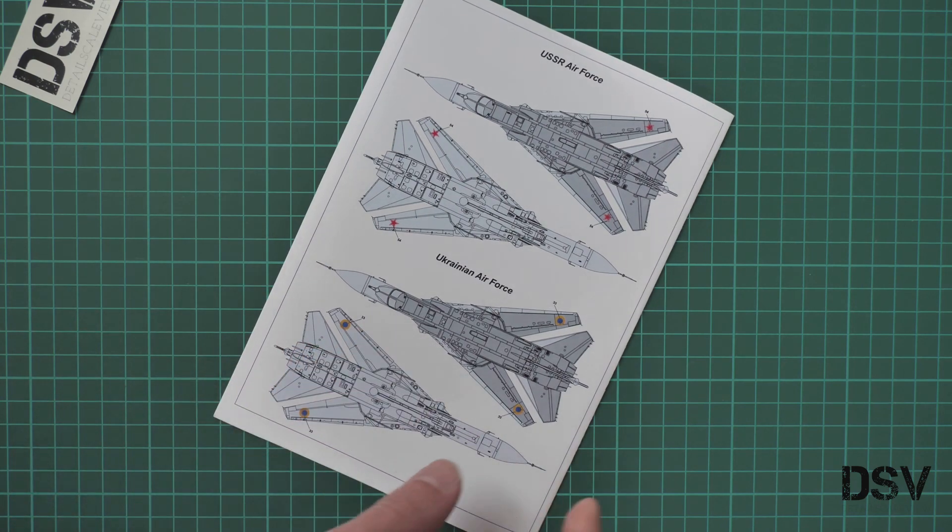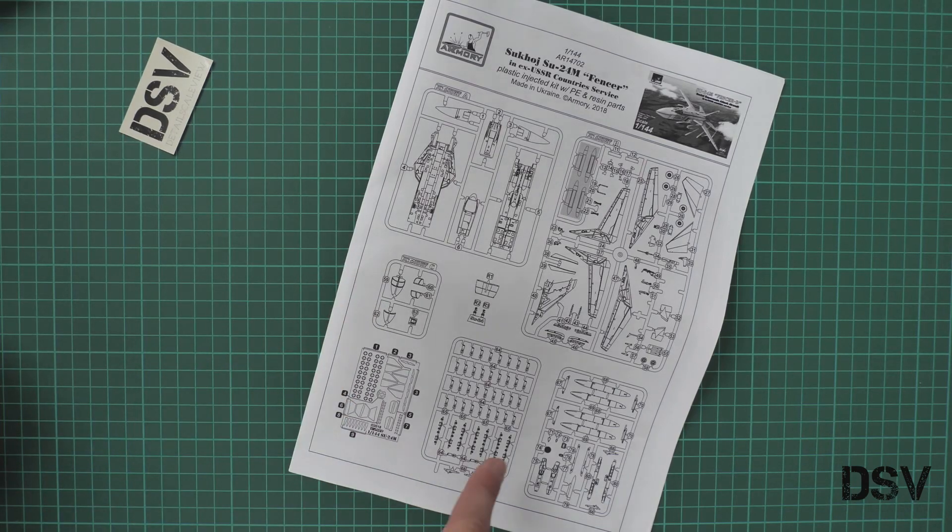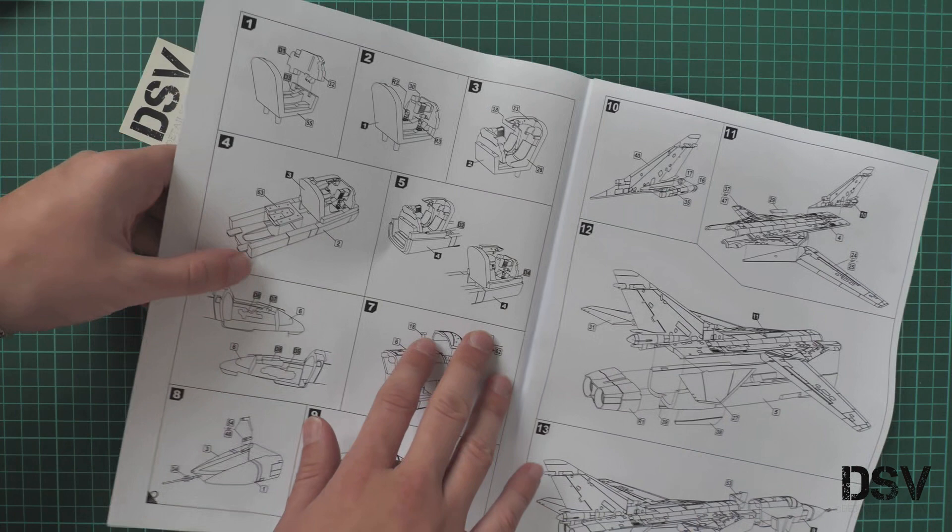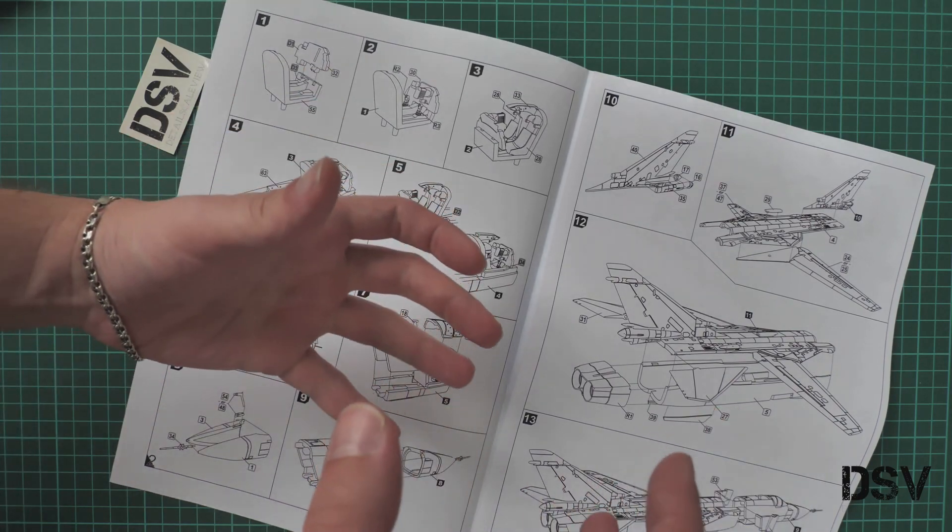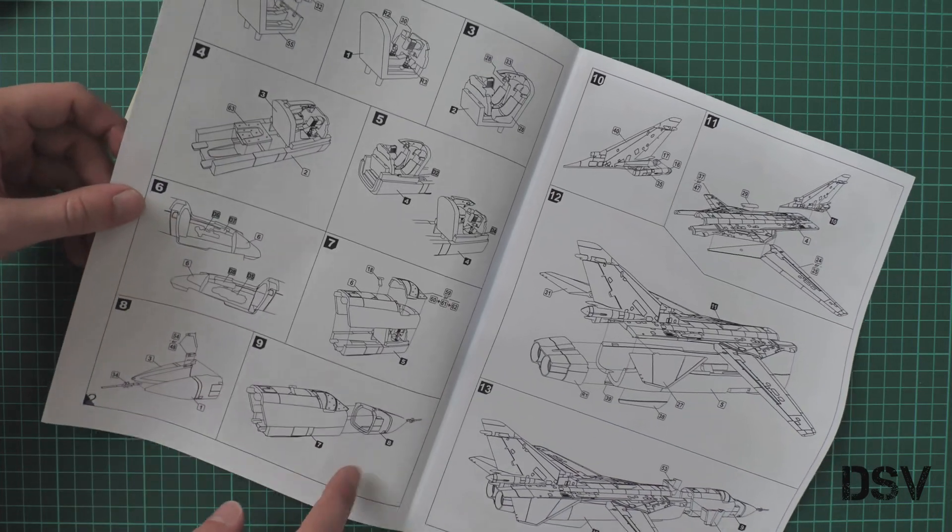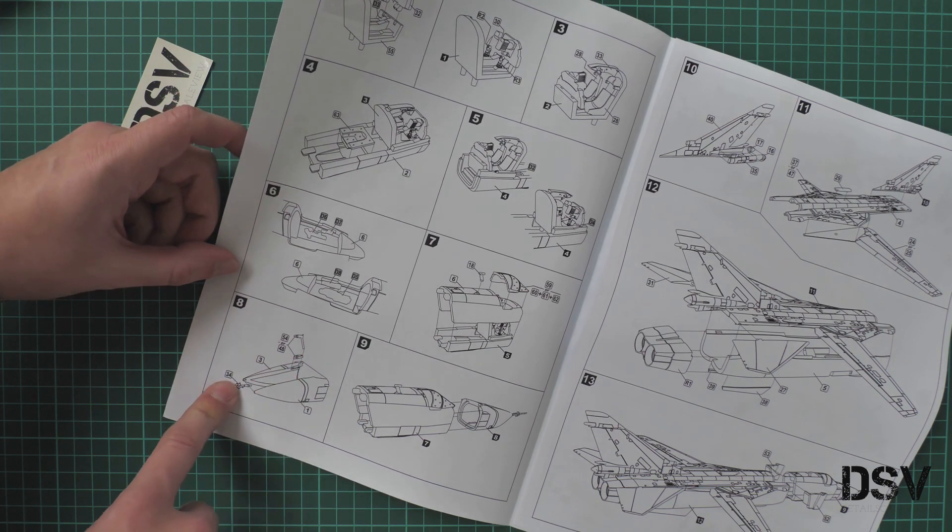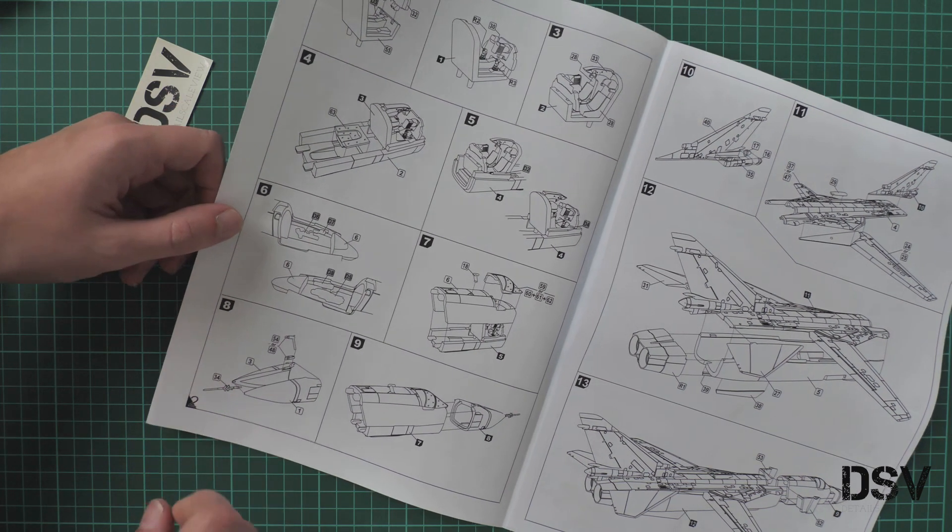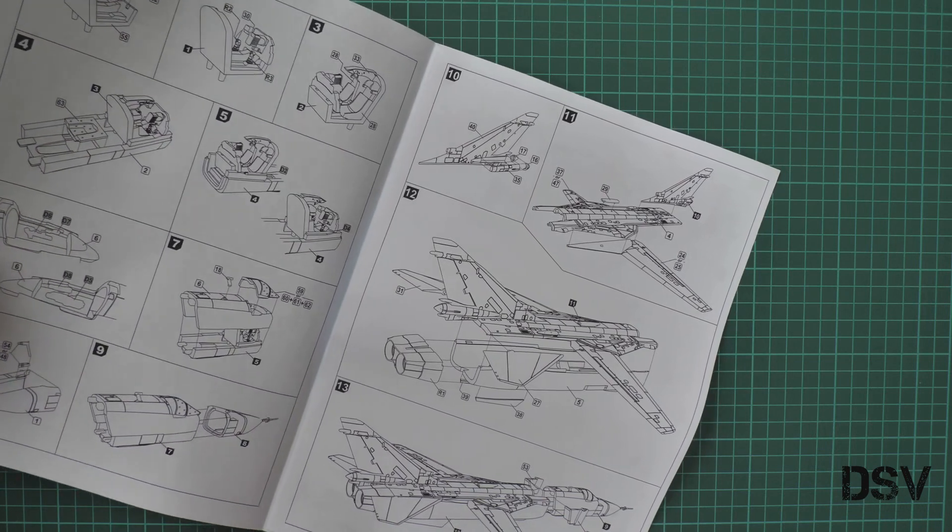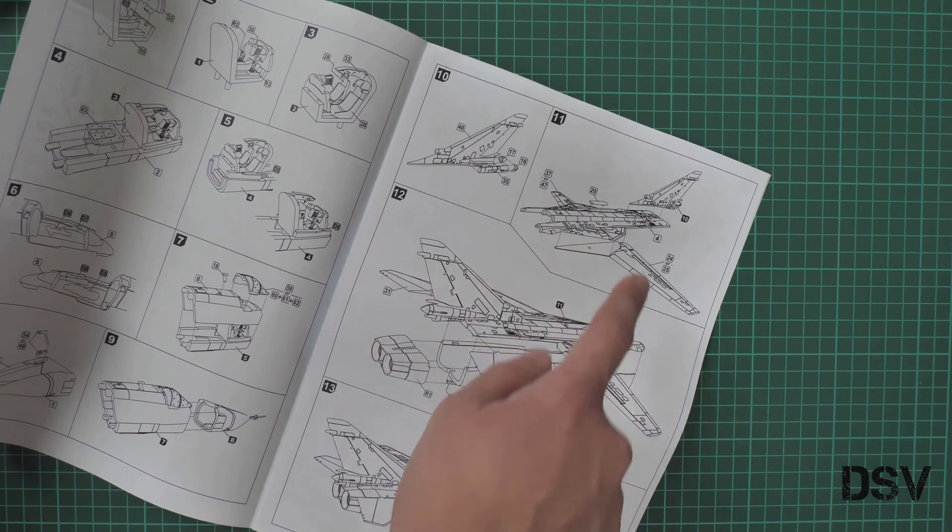The assembly manual is surprisingly big for such a kit. On the first page we have a parts map, then assembly starts with the cockpit. The cockpit is covered with two halves from bottom and top. We continue with nose assembly which involves a lot of various parts. Don't forget to install them because the antenna can be left off until the end, but check before installation.